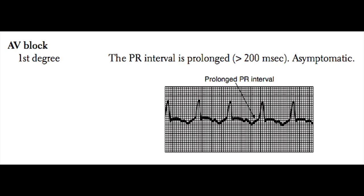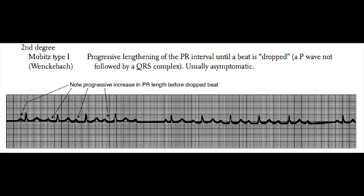Second degree AV block begins to become more worrisome. Second degree AV block type 1, also known as Wenckebach phenomenon, is denoted by a progressive lengthening of the PR interval with each heartbeat. On the left of the EKG strip, you can see a P wave, then a QRS, then a T wave; on the next heartbeat, the PR interval has widened greatly. The PR interval continues to widen until you see a P wave followed by a pause, indicating a dropped QRS. Wenckebach is commonly seen in patients with elevated vagal activity, and most young people will have Wenckebach phenomena while sleeping. Wenckebach in and of itself is asymptomatic and does not need to be treated, generally representing an AV node with significant parasympathetic input.